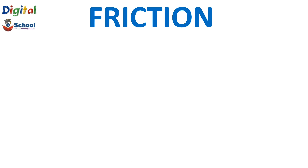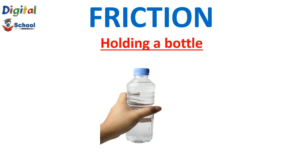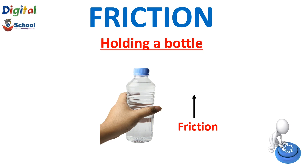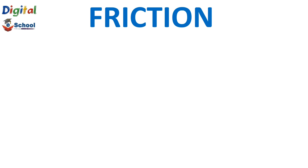The third example is the advantage of holding a bottle. When you are holding a bottle, it does not slip from your hand. Why? Because of friction — between your palm and the bottle, the friction force acts in the upward direction, so the object does not fall from your hands.